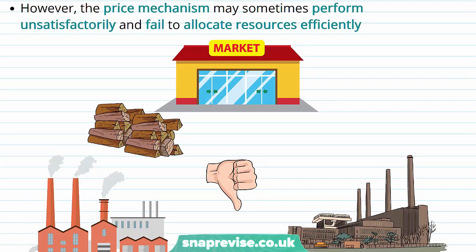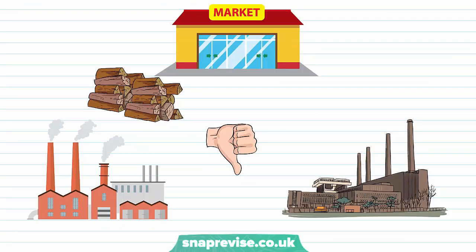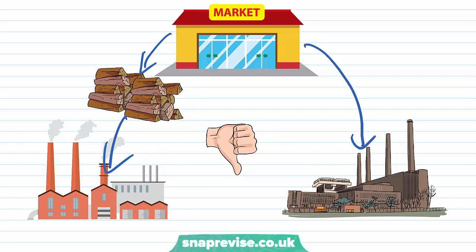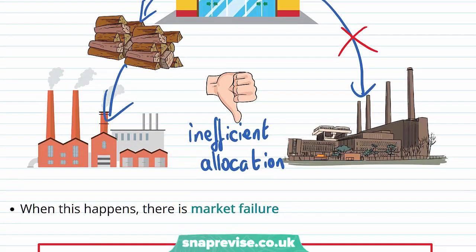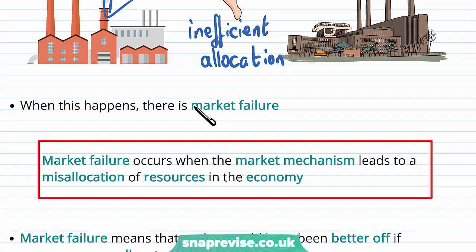However, we have to consider the fact that sometimes the price mechanism may perform unsatisfactorily and fail to allocate resources efficiently. Suppose we have a market where all of the goods are being allocated to just one firm, as opposed to a more even or more efficient distribution of resources to another firm. In this case, we would conclude that there is an inefficient allocation.